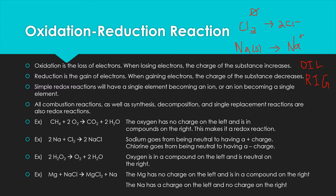Simple redox reactions will have a single element becoming an ion, or an ion becoming a single element by itself. We look for that change between something being in its elemental form and then being in a compound — changing its charge. Redox reactions always have both oxidation and reduction together; you can't have oxidation without reduction. If something loses electrons, they have to go somewhere, and something else has to gain them.